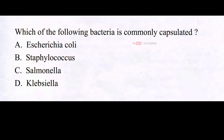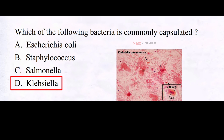Which of the following bacteria is commonly capsulated? A. Escherichia coli, B. Staphylococcus, C. Salmonella, D. Klebsiella. And the correct answer is D. Klebsiella. Klebsiella is often encapsulated, forming a protective outer layer. This capsule helps the bacterium evade the immune system's defenses.